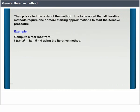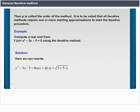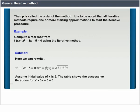Compute a real root from f(x) = x^3 - 3x - 5 = 0 using the iterative method. We rewrite this as x = phi(x) = sqrt(3 + 5/x). Assume initial value x = 2. The table shows the successive iterations for x^3 - 3x - 5 = 0.